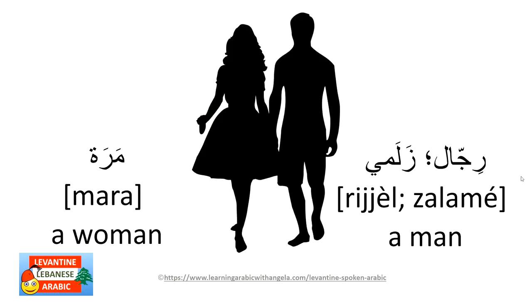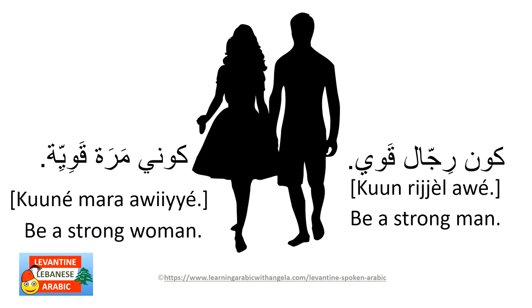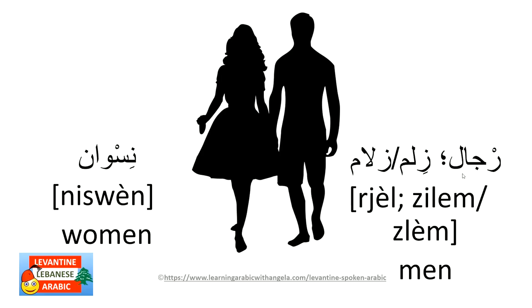How to say a man and a woman in Arabic: rejjal is the colloquial form of rajul; we also say zalami. In the feminine, a woman is mara (standard: imra'a). Example: 'kun rejjal awi' — be a strong man; 'kuni mara awiyyi' — be a strong woman. Plural of rejjal: rjjal; plural of zalami: zalem or zalami. For women: niswaan. Note that mara has no plural and niswaan has no singular — they are suppletive forms.